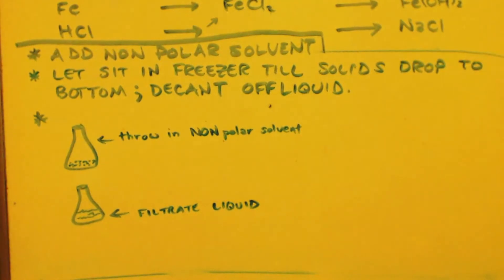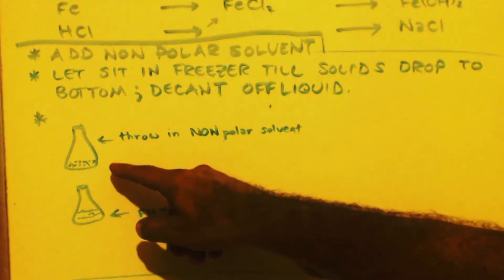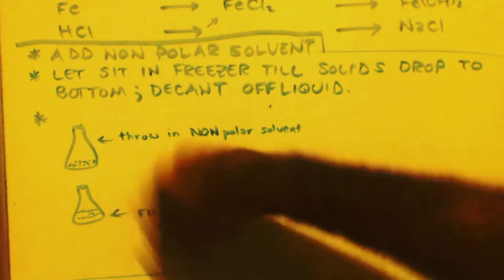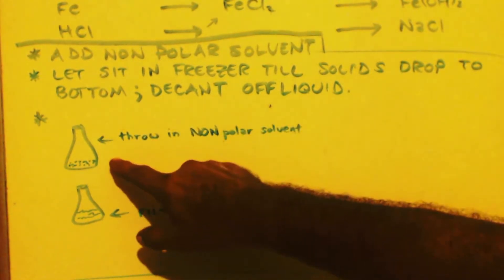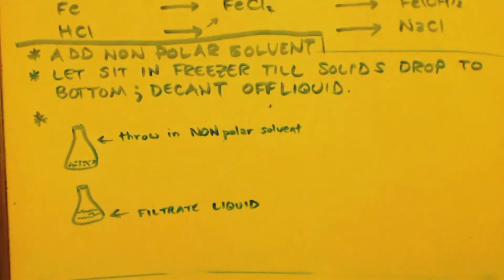Then on the fourth time when you throw in some non-polar solvent, shake it up and let it sit. Now you want to take it out and put it through a filter. Scrape all the solids out and get the solids into the filter.